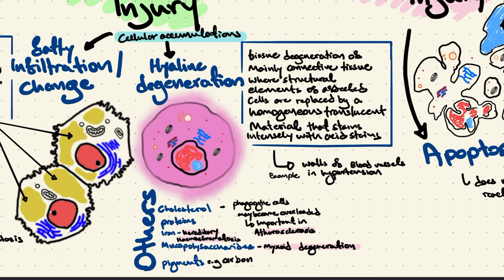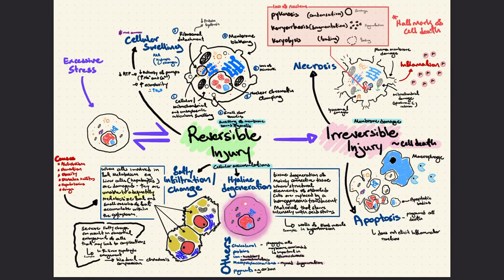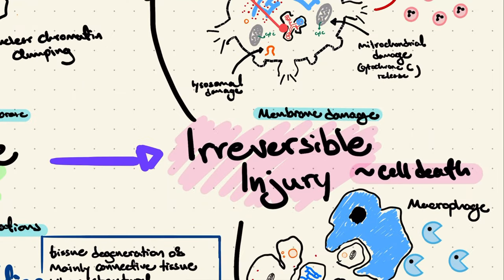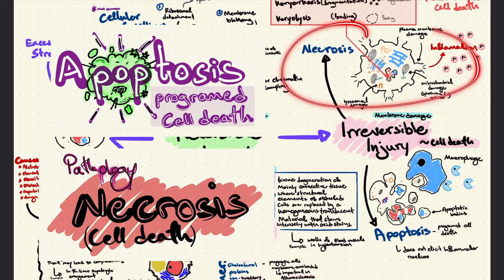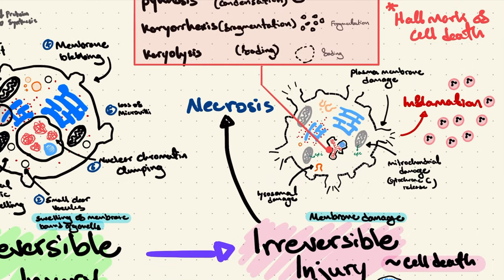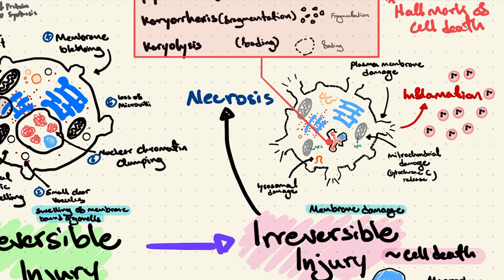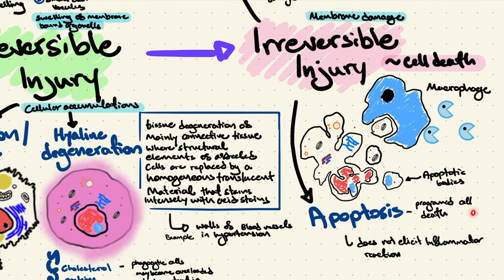The second type of cellular injury is irreversible injury. Irreversible injury can follow reversible injury if the stress persists, or it can result directly from severe injury to normal cells. As the name suggests, there's no coming back — cell death is inevitable. There are two main ways: necrosis and apoptosis. Necrosis is a violent, uncontrolled form of cell death that results in excessive inflammation, whereas apoptosis is a controlled, programmed form of cell death in which the cell shrinks and forms apoptotic bodies that are engulfed by phagocytes such as macrophages, resulting in minimal inflammation.